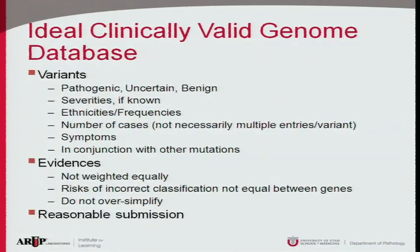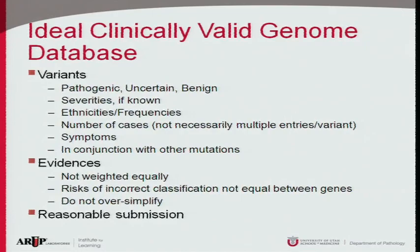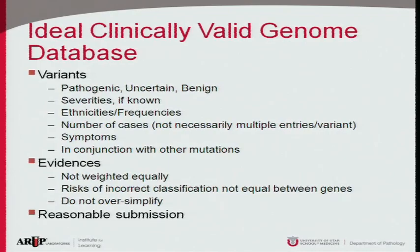What I want is a clinically valid whole genome database. We need variants with known classifications that will likely need to be expertly curated. If severities are known, I'd like to start collecting that information. We need ethnicities and frequencies across different ethnic populations, and the number of cases — though it's more difficult if the same variant appears ten times from the same family or from different studies. A summary of all information, including symptoms and co-occurrence with other mutations, is important.